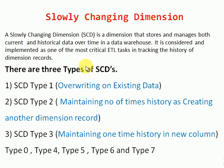Type 1 means if you don't want to maintain any history. If you are receiving data from a source system but don't want to maintain history in your target data warehouse, you can go for type 1. Type 1 will always overwrite the existing data. For example, if a customer changes their address, the target table will only maintain the latest address — if you don't need the previous address, you can go for type 1.